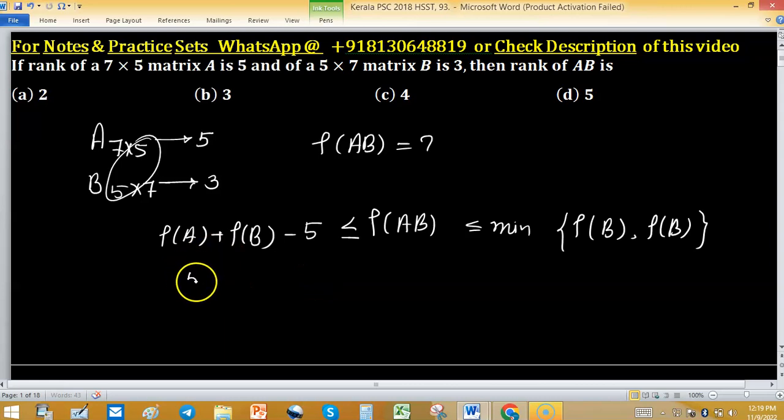So rank of A is 5, rank of B is 3. Then 5 + 3 - 5 ≤ rank of AB ≤ 3, because the minimum of rank A and rank B is 3.